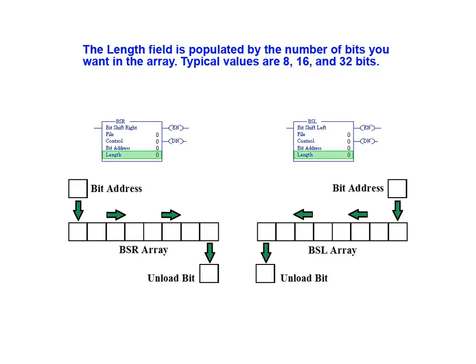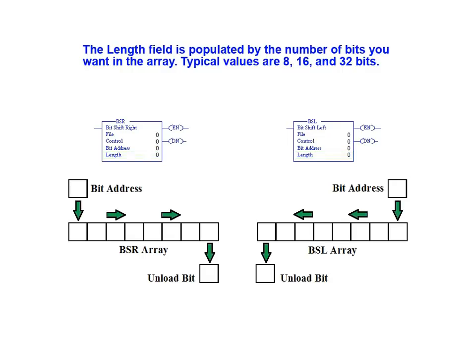The length field is populated by the number of bits you want in the array. Typical values are 8, 16, and 32 bits. The BSR and BSL instructions work in the same way. The shift direction and locations at which data is shifted in or out is the significant difference between these two instructions.